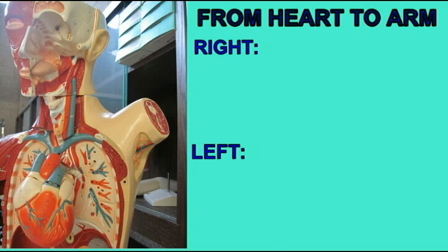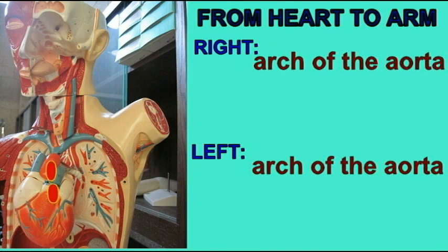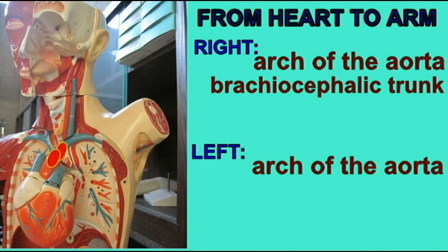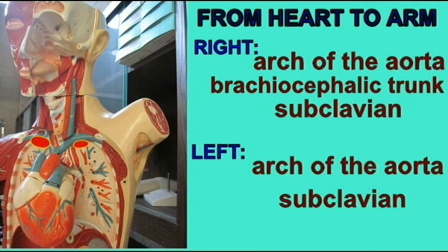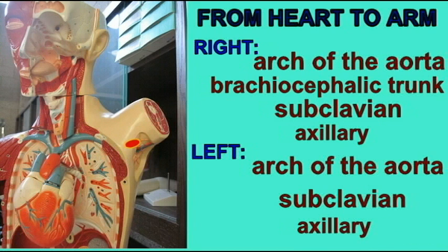To get blood from the heart to the arm, blood leaves the left ventricle and passes through the arch of the aorta. On the right side, it passes through the brachiocephalic trunk to the subclavian artery. On the left side, the subclavian comes directly from the arch of the aorta, and then from the subclavian goes to the axillary artery.